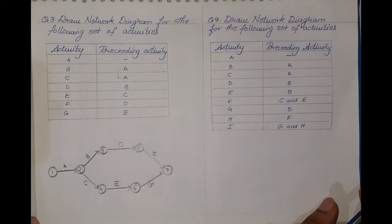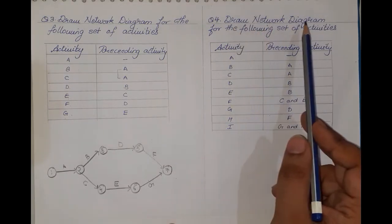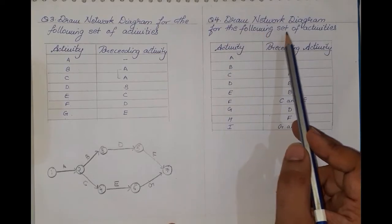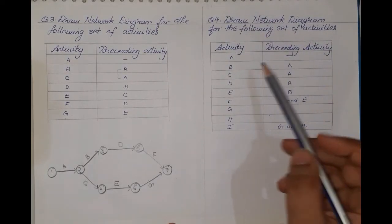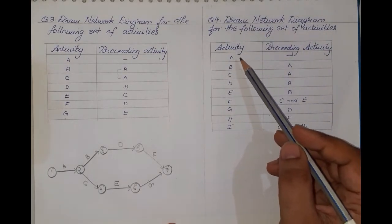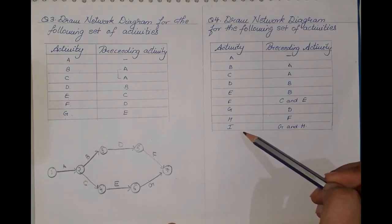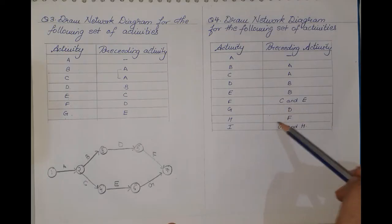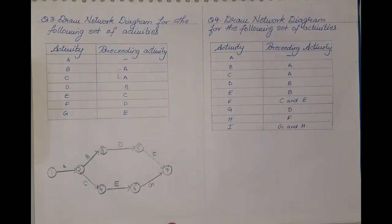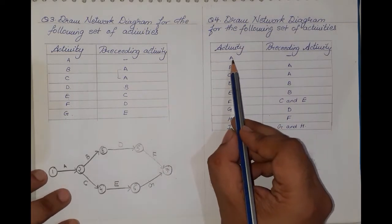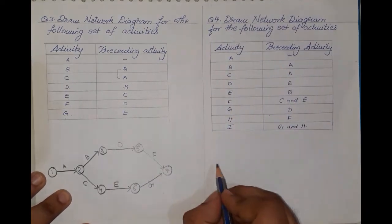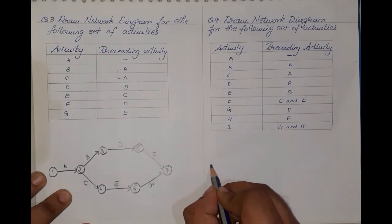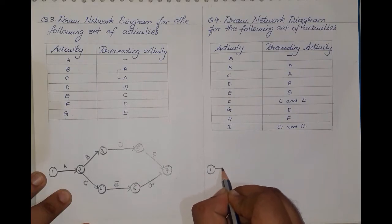Now let us start with question number four — again a similar question: draw a network diagram for the following set of activities. Many activities are given here: A, B, C, D, E, F, G, H, and I, along with many preceding and merging activities. Activity A again has a preceding activity of nil, so our sum will start with activity A.